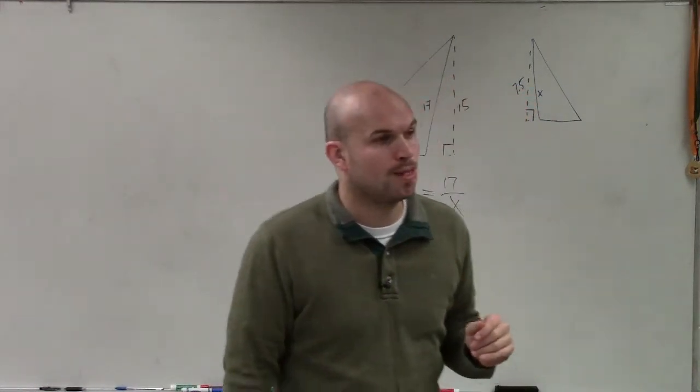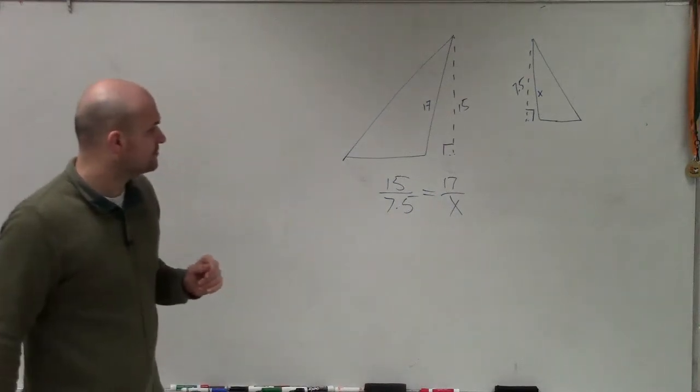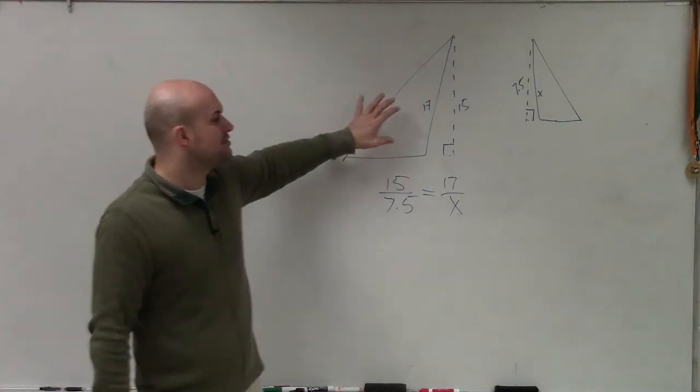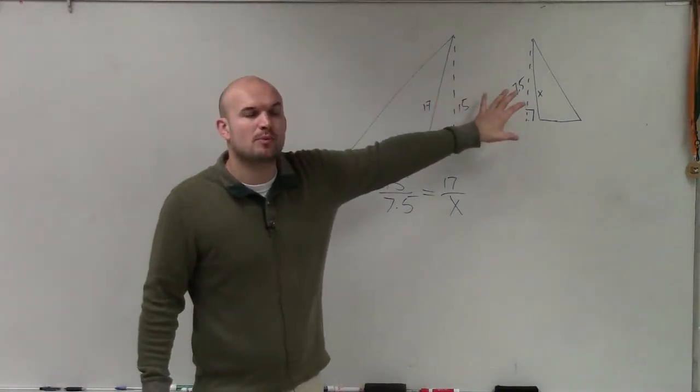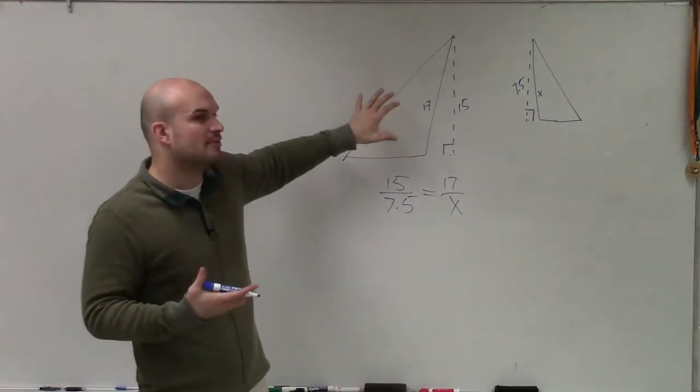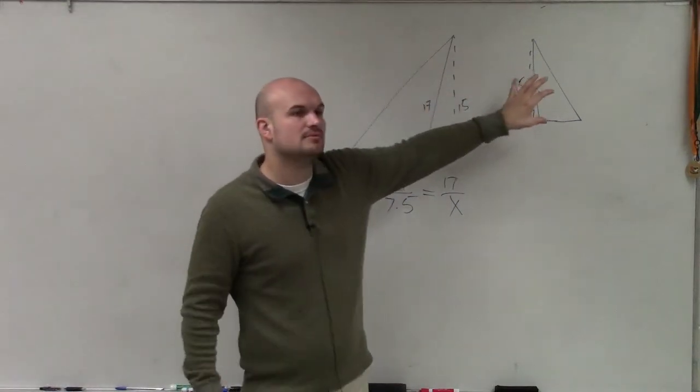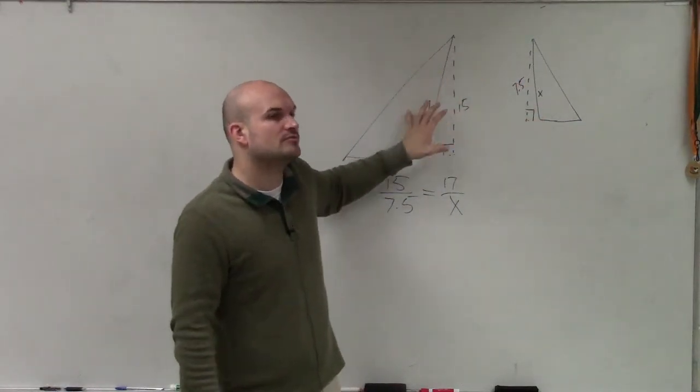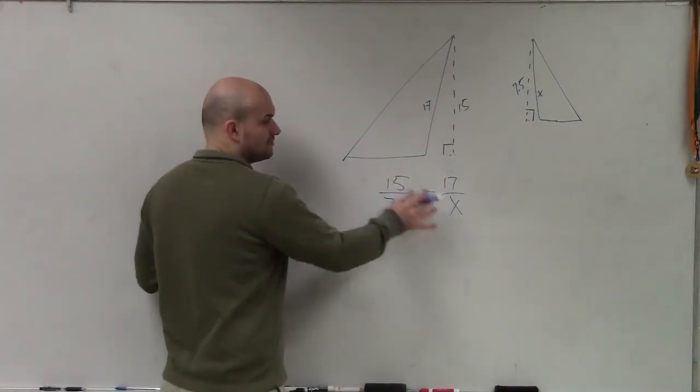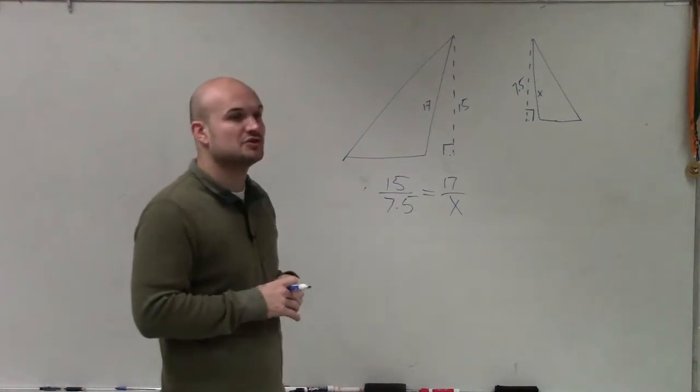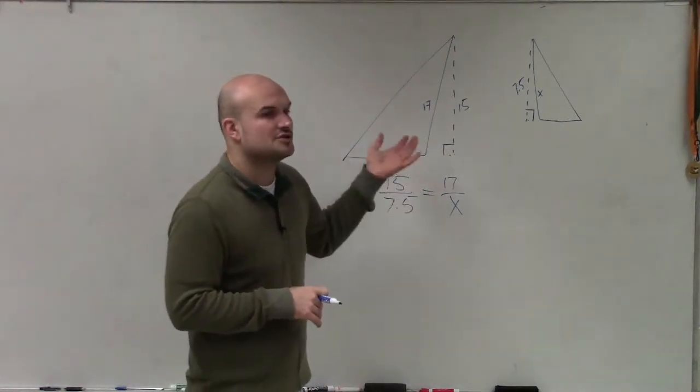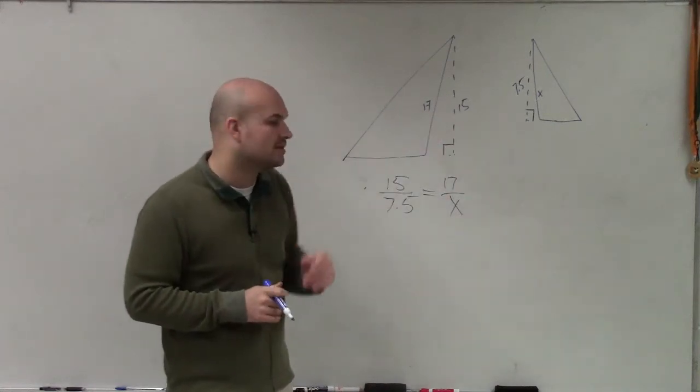Can you do 17 over 15 equals x over 7.5? I'm sorry? 17 over 15 equals x over 7.5. We want to go from triangle to triangle proportions, and I'll show you later why that's going to be important. But always, when we're doing our proportions, go from triangle to triangle. OK? So yes, for some problems you will be able to do the same thing with that, Casey, but for some problems it's not going to be possible. So just to avoid that, try to always go from triangle to triangle.